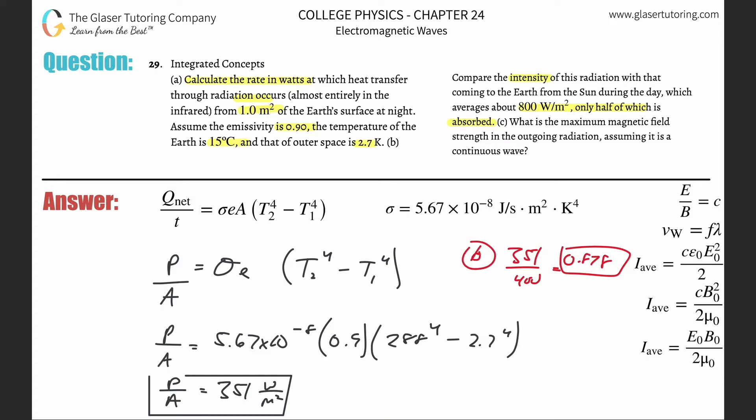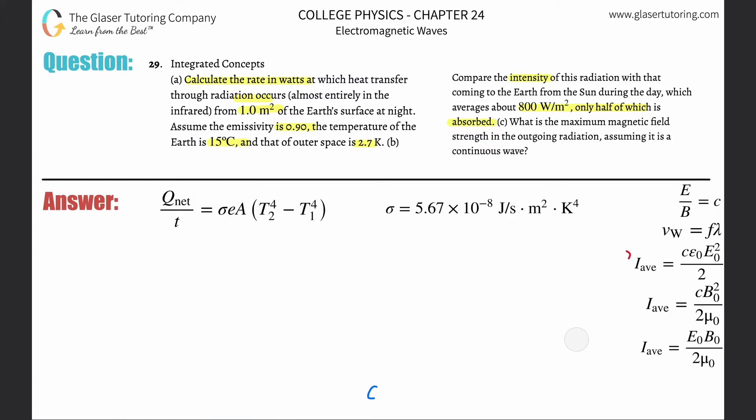Letter C says what is the maximum magnetic field strength. I think we're going to need a little space here. What is the max rate of this outgoing radiation? Let's save the 351. Good thing you can rewind the video.